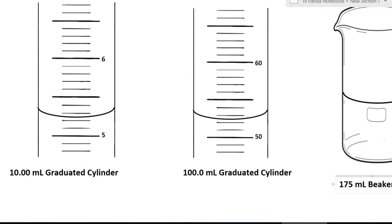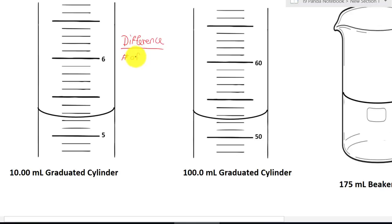For example, we are going to look at a ten-point-zero-zero milliliter graduated cylinder. The formula is: the difference divided by the number of increments. So the difference — six minus five — will be one. That's your difference, divided by the number of increments.